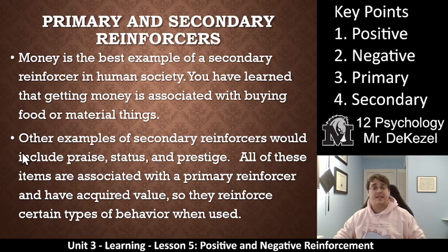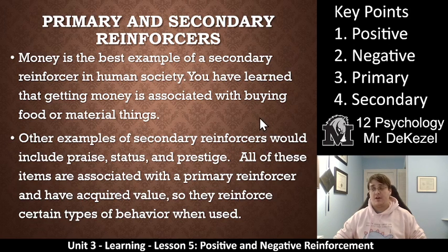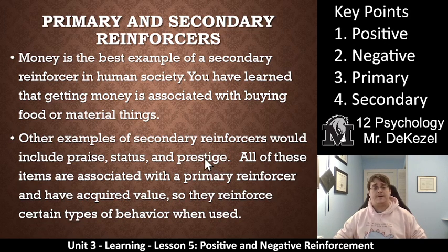We have learned from the very beginning that we can buy things with money — food, material things, experiences. So it is a secondary reinforcer that unlocks a lot of biological needs. Other examples of secondary reinforcers would be praise from your parents or someone you respect, status, maybe getting a degree, prestige — people treating you better. All of these are associated with a primary reinforcer; they allow you to get biological needs more easily, but in and of themselves are not biological needs. You don't need prestige to live — they have acquired value, and they reinforce certain behaviors when used.